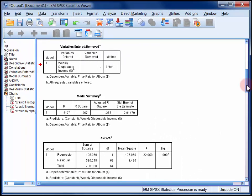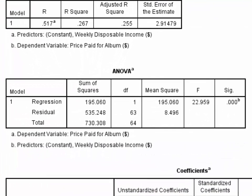The ANOVA table reports the null hypothesis significance test for R-squared. The null hypothesis for this test is that R-squared does not depart from zero. Here we can reject this null hypothesis because the significance value is less than alpha, which we would typically set at 0.05. So in other words, R-squared departs significantly from zero.